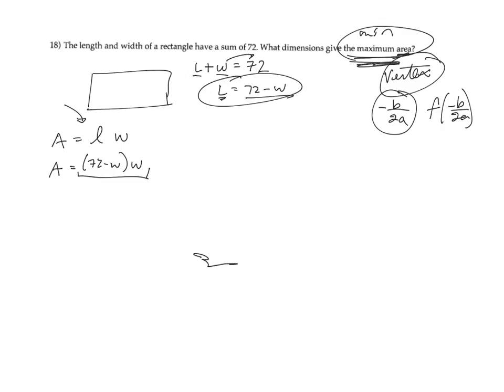I should foil it out first or distribute it out first. So W times 72 would be 72W, and W times W would be a negative W squared. Rewriting this in the proper format, I would write minus W squared plus 72W. So now here I've got that quadratic thing from which I want to figure out the vertex.